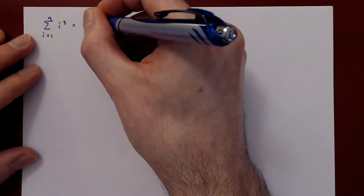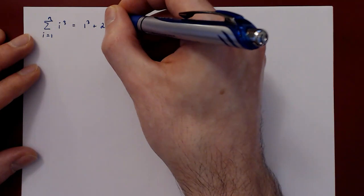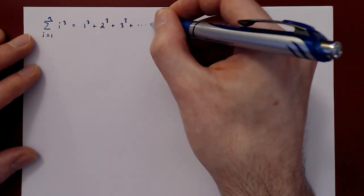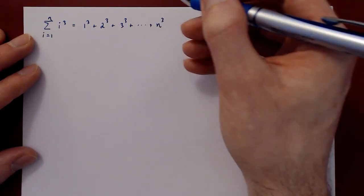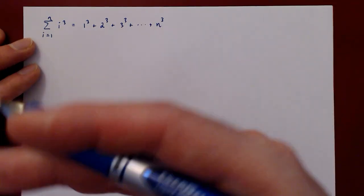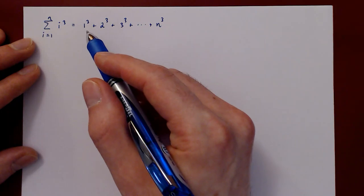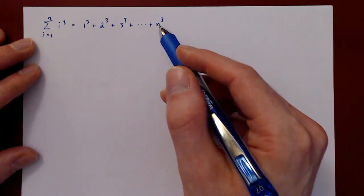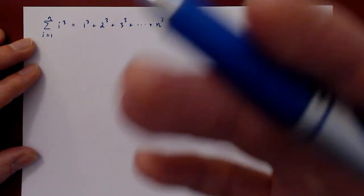So this is 1 cubed plus 2 cubed plus 3 cubed all the way up to n cubed. Again the objective here is to find a shortcut for summing these n cubes in the form of a summation formula.